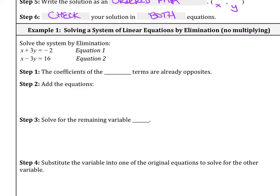In this case, yes, there is something that will cancel out. We see that we have positive 3y and a negative 3y. So in this case, we want to be able to cancel those out. The coefficients of the y terms are already opposites. We have a positive 3 and a negative 3. So we're going to add these equations together. x plus 3y equals negative 2 and x minus 3y equals 16.